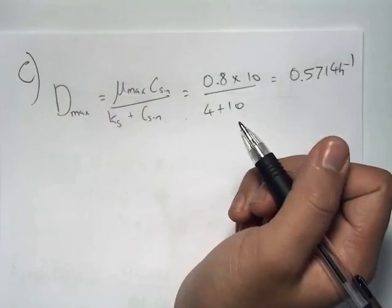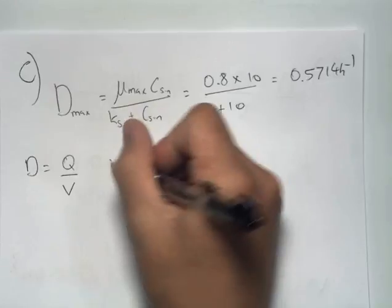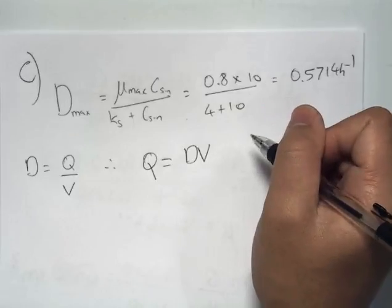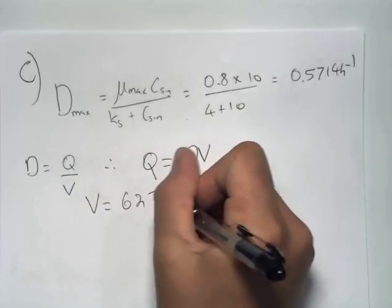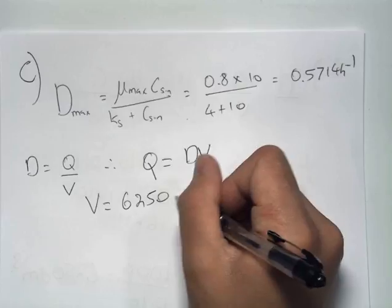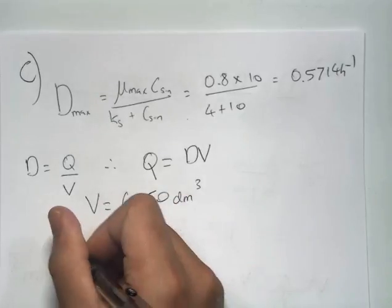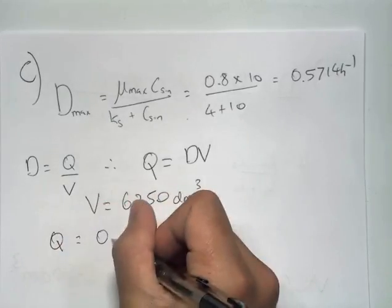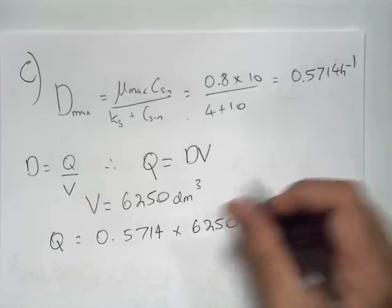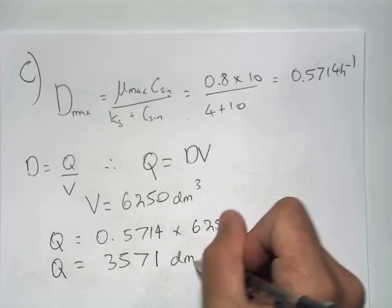We can then use this to find the flow rate that this occurs at. Bearing in mind that D equals Q over V, and therefore Q equals DV. Bearing in mind that our volume of fermenter is 6,250, we can state our volumetric flow rate is 0.5714 times 6,250, which equals 3,571 decimeters cubed per hour.